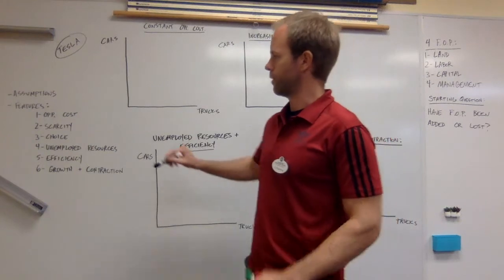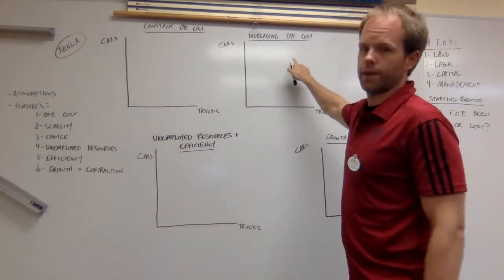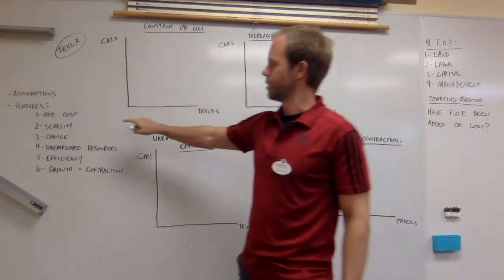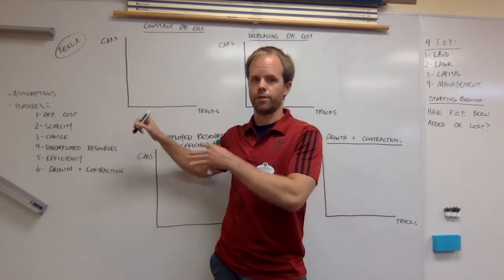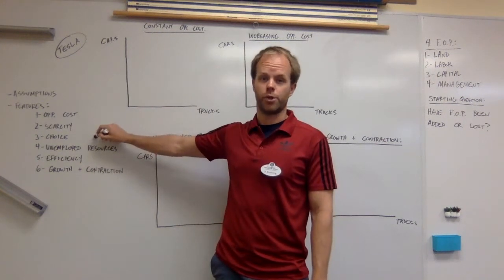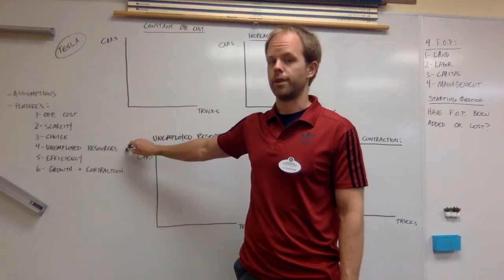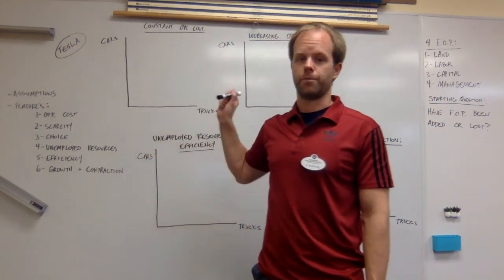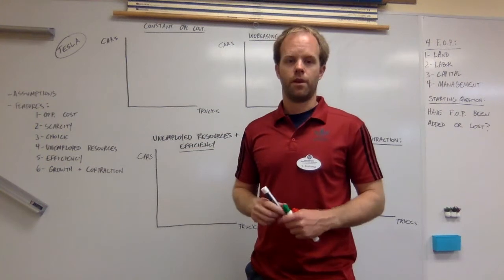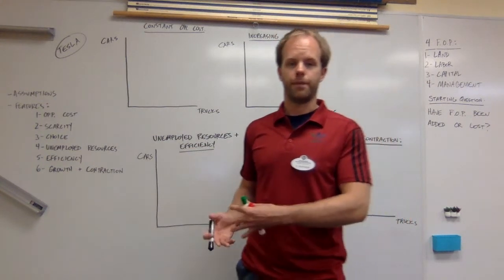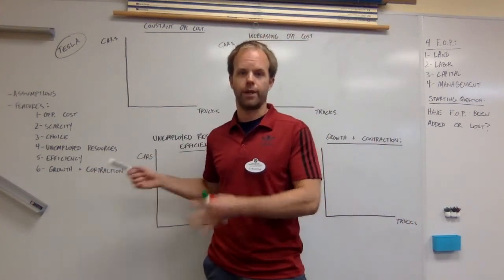The different things that we can do with this model: we can show opportunity cost of two types - constant opportunity cost or an increasing opportunity cost. We can show scarcity. But again, we are assuming the factors of production are fixed, so that's where the scarcity part comes in. We can show choices about what businesses are going to make. We can show the extent to which a business is using its resources. We can assess how efficient a business is, and we can show whether a business is growing or shrinking.